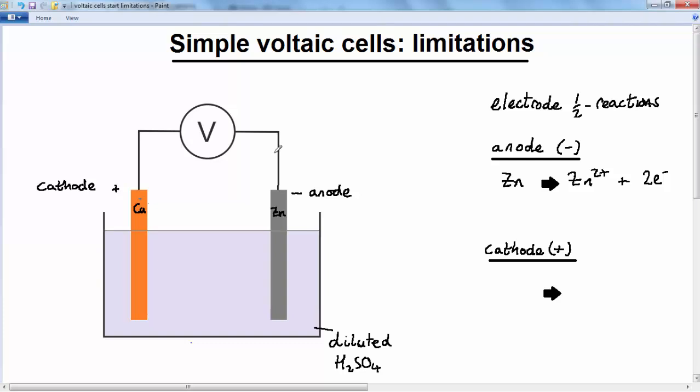And those two electrons are then pushed around the circuit towards the cathode. So that shows the direction in which the electrons are flowing and the zinc 2+ ions gather around the negative anode.